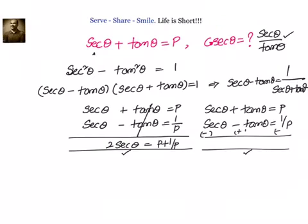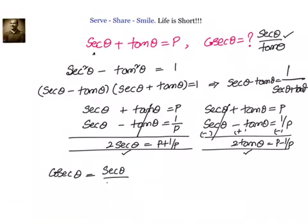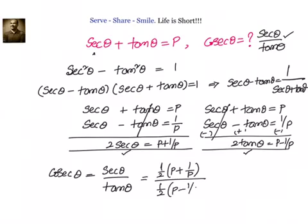Subtracting the equations gives 2 tan theta equals p minus 1 over p, so tan theta equals half of (p minus 1 over p). Now cosecant theta equals secant theta divided by tan theta. Secant theta is half of (p plus 1 over p), and tan theta is half of (p minus 1 over p). We can cancel the halves, take the LCM, and simplify to get p squared plus 1 divided by p squared minus 1.